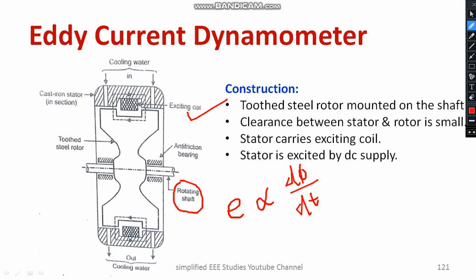There is a cooling water arrangement — cooling water in and cooling water out. Because due to eddy current, the rotor conductor is getting heated up. To balance the temperature, there is circulating cooling water. The inlet and outlet are directly visible in the diagram. Imagine it as a 3D layout, though a 2D diagram is given, which is somewhat difficult to understand.